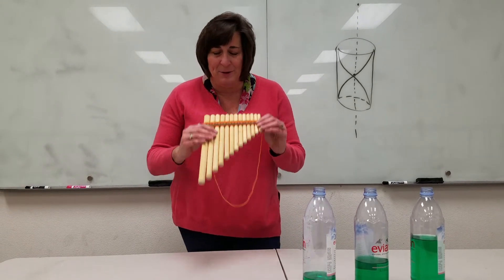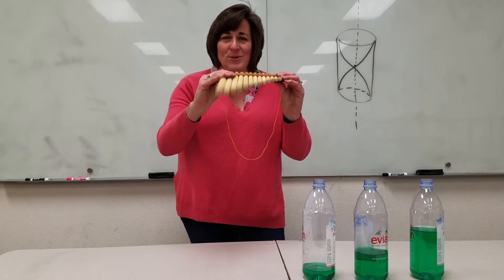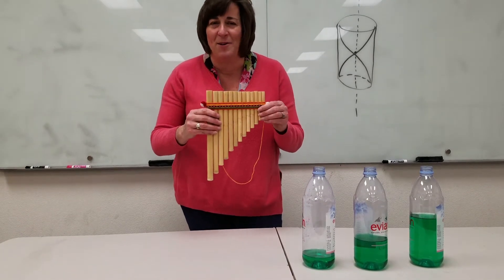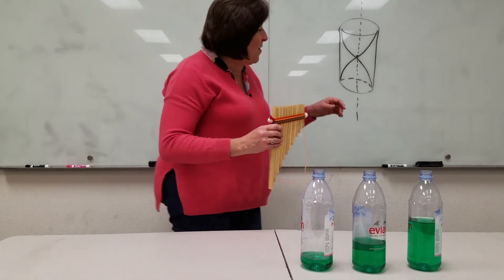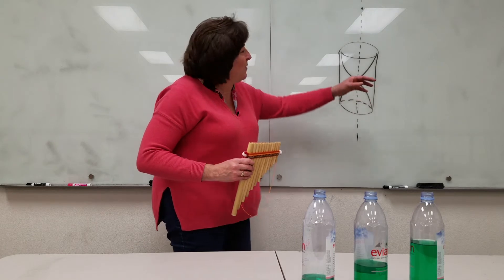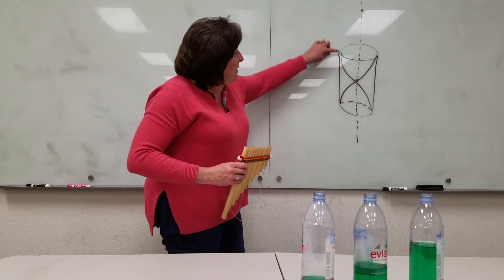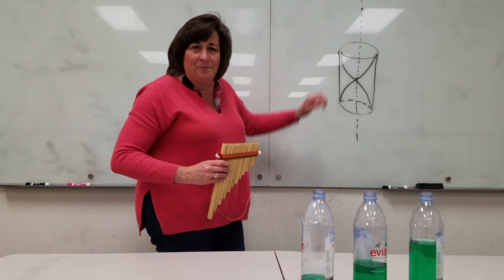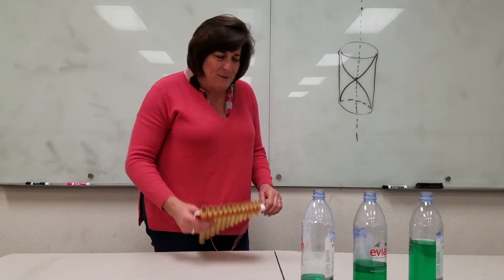So a pan flute — the tubes are hollow. If we want to excite a fundamental mode, we have to have one node in the middle and an anti-node up here.